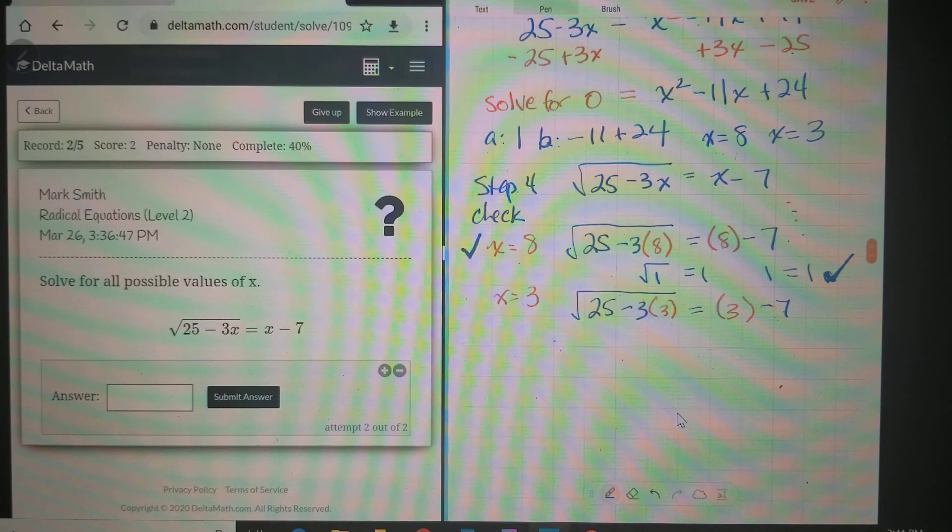Well, I can see we're going to have a problem here and the reason is that when we take, 3 times 3 is 9, so 25 - 9, this is √16. And over here we're going to have 3 - 7.